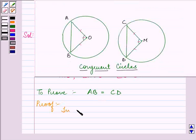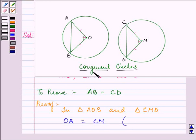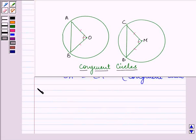Now, in triangle AOB and CMD, we have OA is equal to CM. As we know, congruent circles have the same radii. This is given to us in the question.